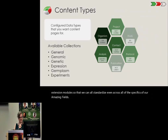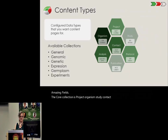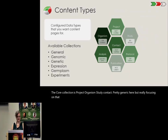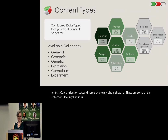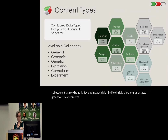The core collection is project, organism, study, and contact — pretty generic, but really focusing on that core attribution set. And here's where my bias is showing: some of the collections my group is developing include field trials, biochemical assays, greenhouse experiments, phenotypic traits, genetic markers, and genome association studies.